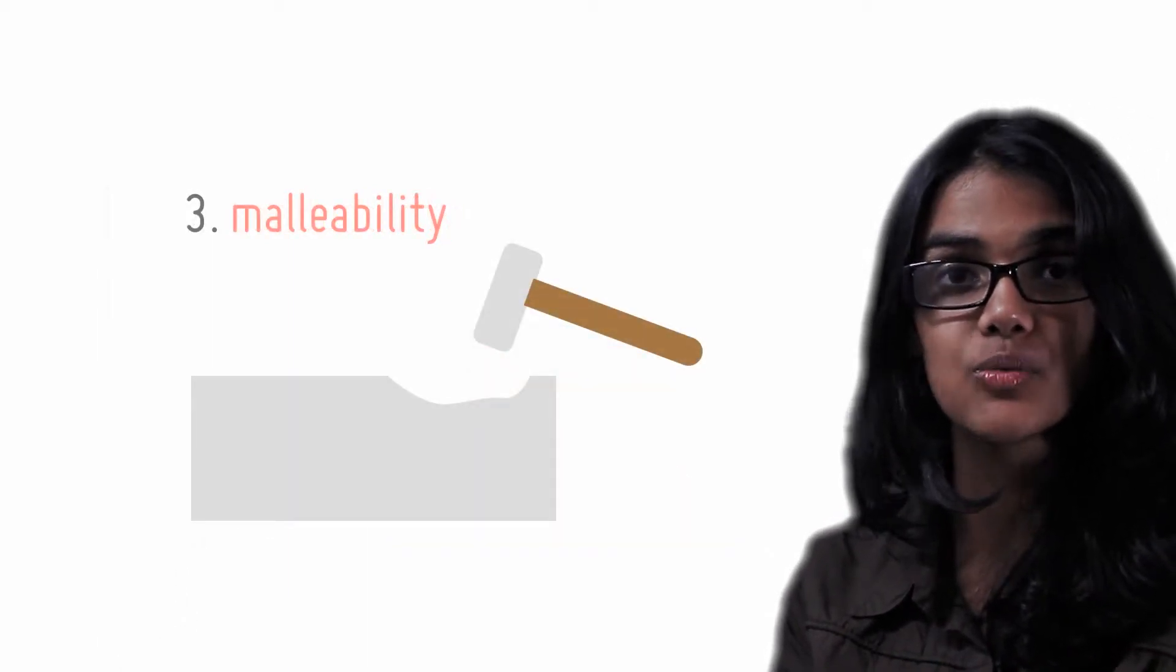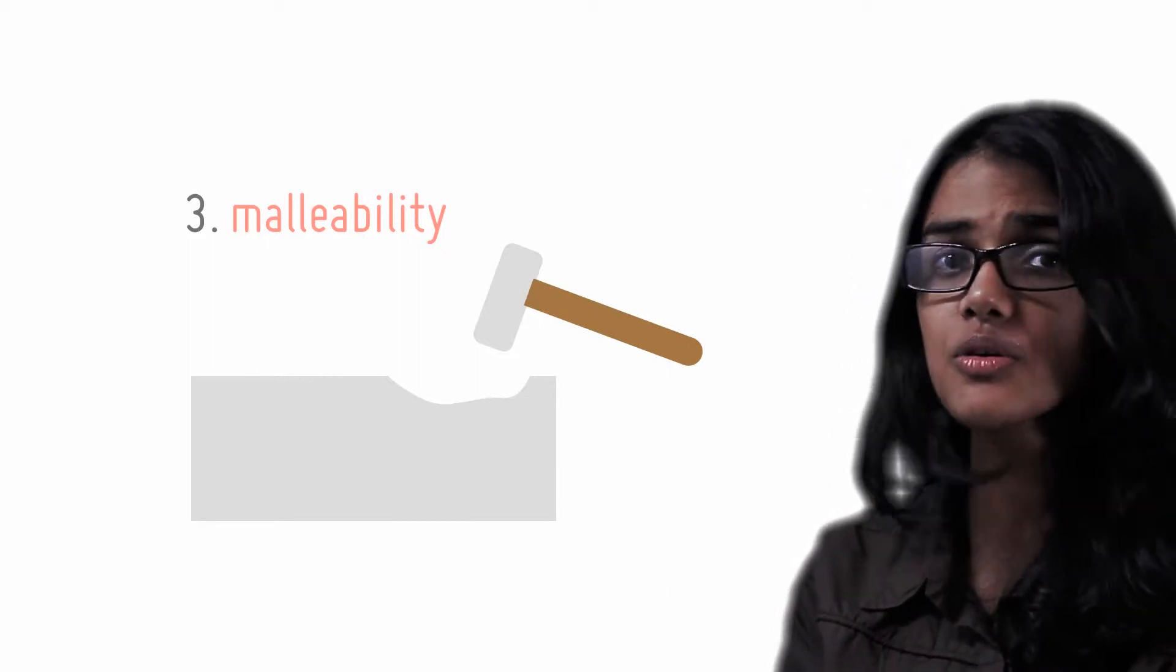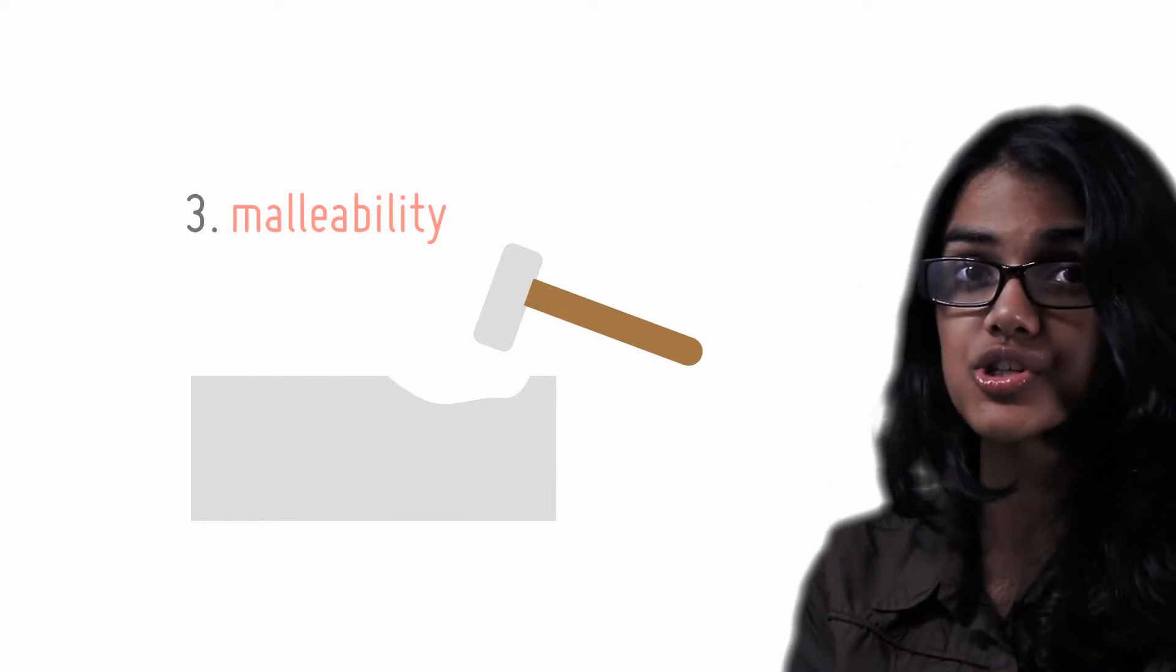The third is malleability, which is the ability of a metal to be shaped. If this were impossible, the aluminum foil in your kitchen wouldn't be so thin.